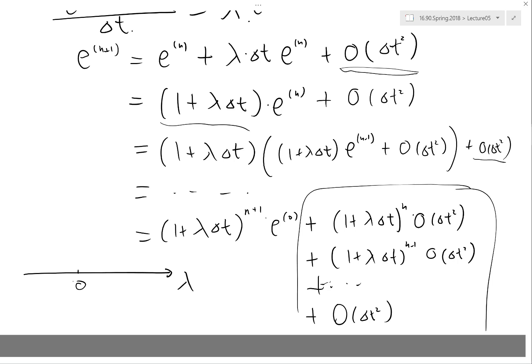What does lambda have to satisfy for the scheme to be stable? Yeah, lambda times delta t has to be what? Less than... The whole thing, one plus lambda delta t, has to be less than one and greater than minus one, right?